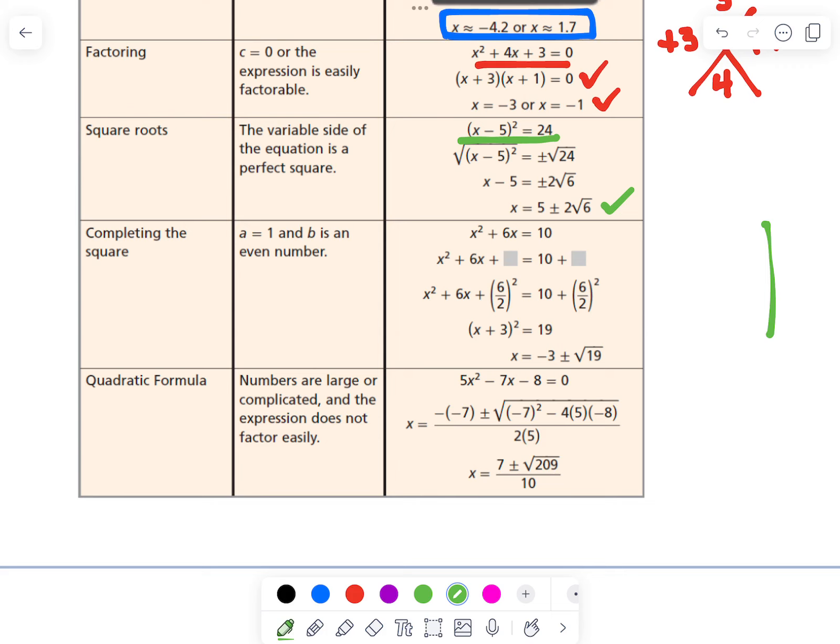Our next method is completing the square. With completing the square, you want to make sure that c is on the right-hand side. Then you take half of b, square it, and add it to both sides. So here is the half of b added to both sides. And then you solve it.